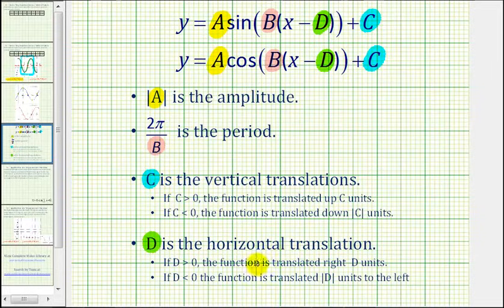D affects the horizontal translation or horizontal shift, sometimes called the phase shift. If we have x minus D, the shift is right. And if we have x plus D, the shift is left.